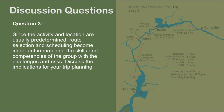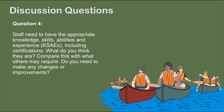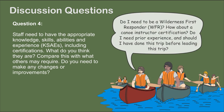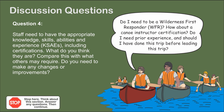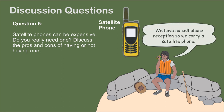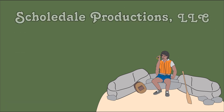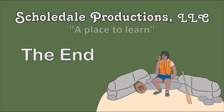Since the activity and location are usually predetermined, route selection and scheduling become important in matching the skills and competencies of the group with the challenges and risks. Discuss the implications for your trip planning. Staff need to have the appropriate knowledge, skills, abilities, and experience, including certificates — what do you think they are? Compare this with what others may require and consider whether you need to make changes or improvements. Satellite phones can be expensive — do you really need one? Discuss the pros and cons of having or not having one. There you have it: a primer on trip planning. Remember, this is the beginning and not an end.